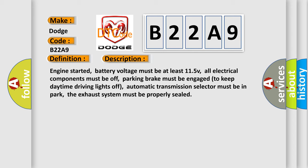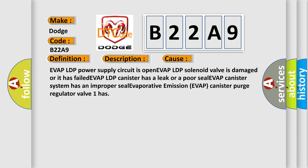This diagnostic error occurs most often in these cases: EVAP LDP power supply circuit is open. EVAP LDP solenoid valve is damaged or it has failed. EVAP LDP canister has a leak or a poor seal. EVAP canister system has an improper seal. EVAP LDP canister purge regulator valve one has.